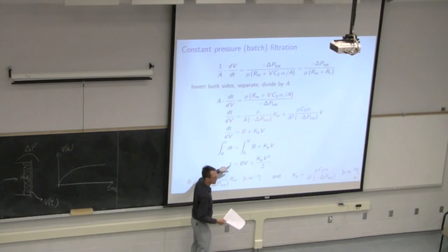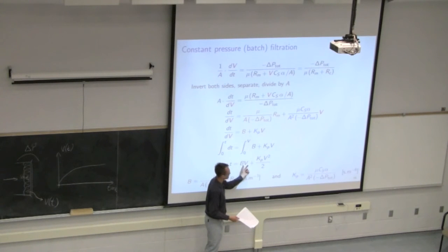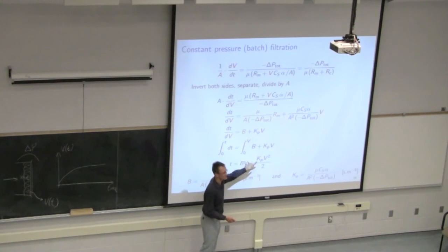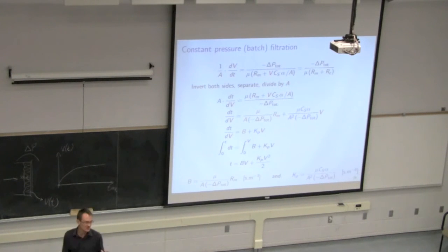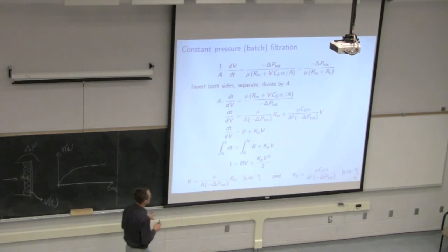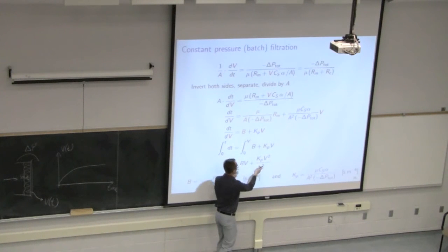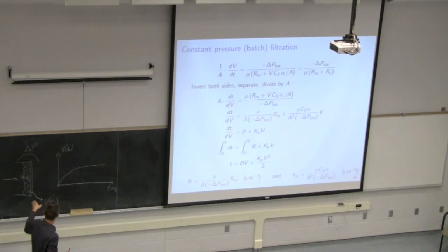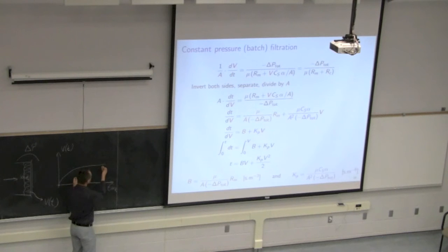After integrating this equation, we can create an equation telling us the time to filter for a given volume V. This is the time needed to operate the filter to achieve a certain volume V, given the two constants B and KP. KP wraps up the cake resistance; B wraps up the medium resistance. If I know those two constants, I can predict the time to achieve a given volume of filtrate.